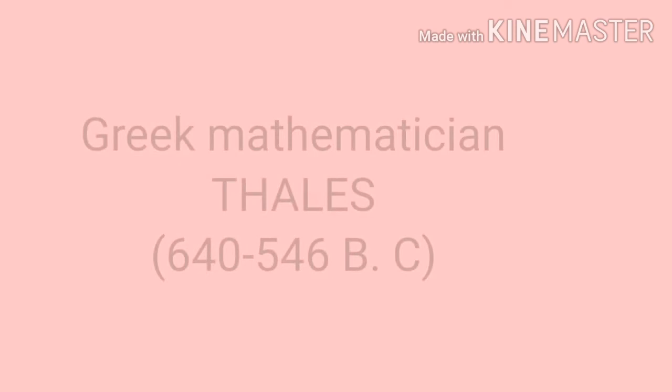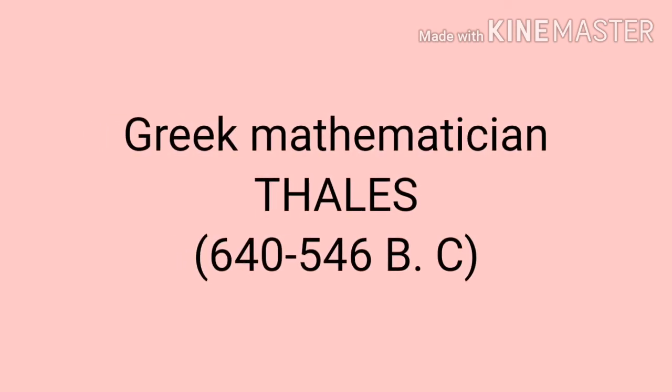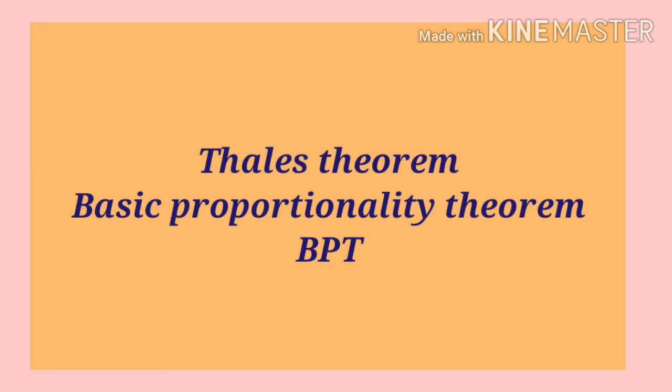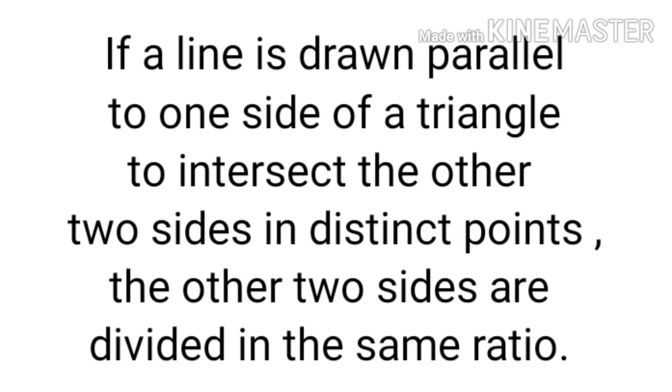This was the observation made by a Greek mathematician Thales, which we are studying now as Thales theorem. It is also known as basic proportionality theorem. The theorem states that if a line is drawn parallel to one side of a triangle to intersect the other two sides in distinct points, the other two sides are divided in the same ratio.